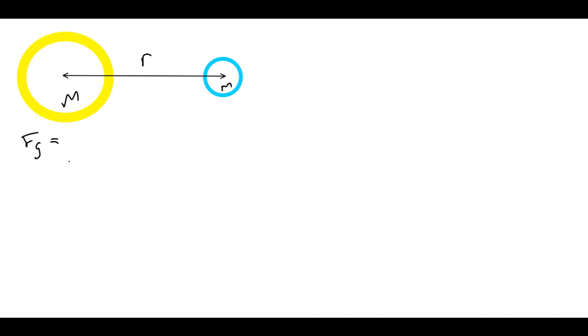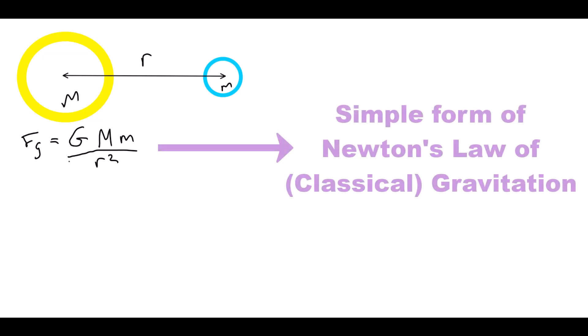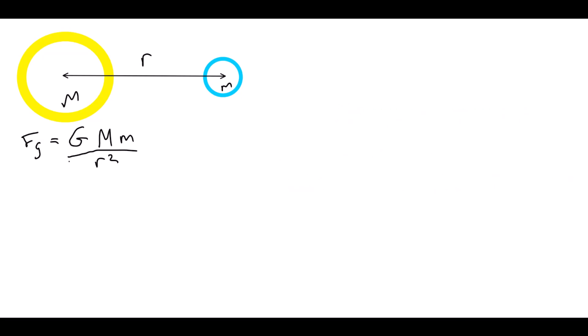So f subscript g is gravitational force. Big M, little m and r are from the diagram, and big G is known as Newton's gravitational constant. Big G is just a number, which tells us how strong gravity is in classical physics. It's a universal constant, meaning it is the same for any interaction, no matter where it happens in the universe. Big G is our first roadblock. As for our analysis to work, we need to know its value.